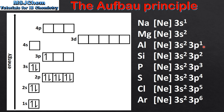Next we start filling the 3p sublevel starting with aluminium. Next we have silicon which is 3s2, 3p2. Next is phosphorus which is 3p3. Moving on to sulfur which is 3p4. Then chlorine which is 3p5. And finally argon which is 3p6. As you can see we've now completed the 3p sublevel.